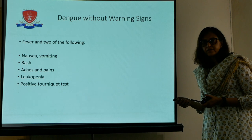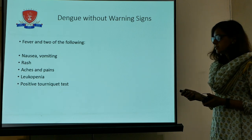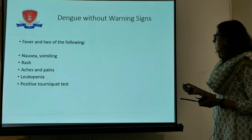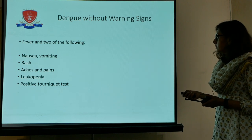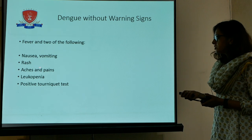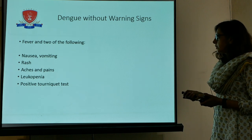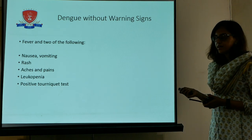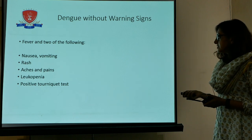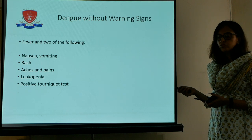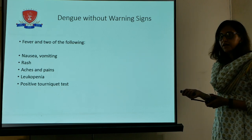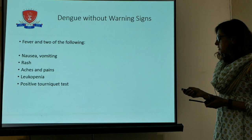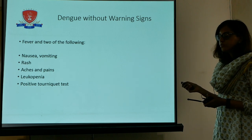In 1997, the WHO classified dengue as: dengue without warning signs, dengue with warning signs, and severe dengue. A patient who presents with fever plus any 2 of the following — rash, aches and pains, leukopenia, or a positive tourniquet test — is classified as dengue without warning signs. Nausea or vomiting counts as well. Any 2 of these criteria plus fever places the patient in the dengue without warning signs category.